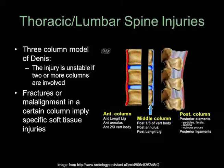Fractures or malalignment in a certain column imply specific soft tissue injuries. In the anterior column, these include the anterior longitudinal ligament and anterior annulus. In the middle column, these include the posterior annulus and the posterior longitudinal ligament. In the posterior column, these include the posterior ligaments. Remember that we cannot see these specific ligaments and soft tissues on x-rays — we can only see the osseous structures.